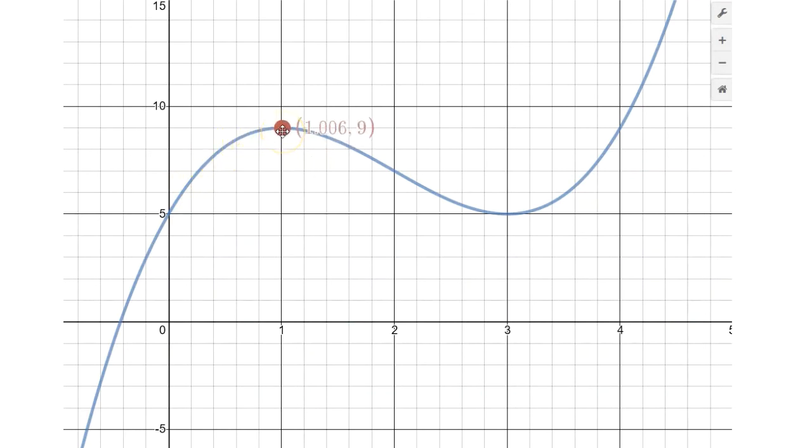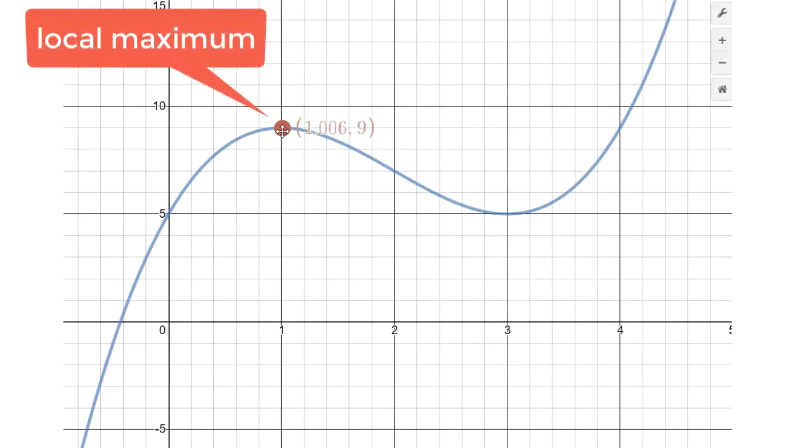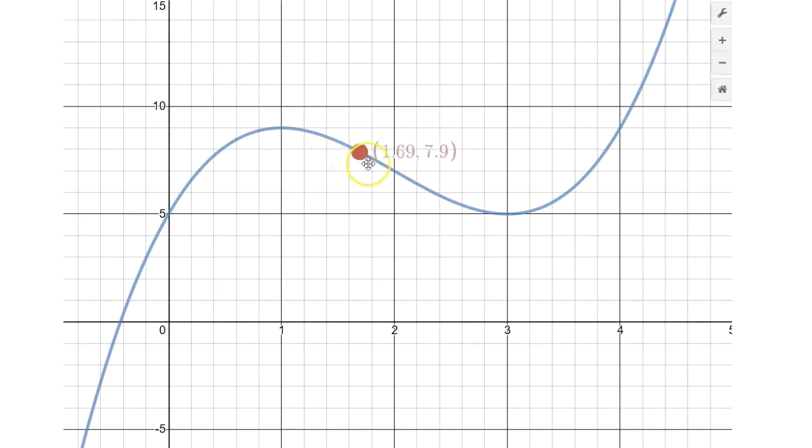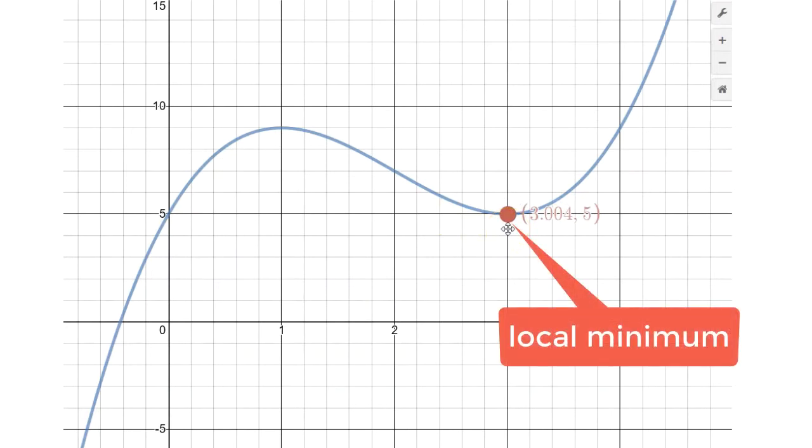We arrive at what we're going to consider a local maximum point of this graph, and we can continue moving the point across the graph until we hit an interesting point over here where we have what we're going to call a local minimum of this particular function.